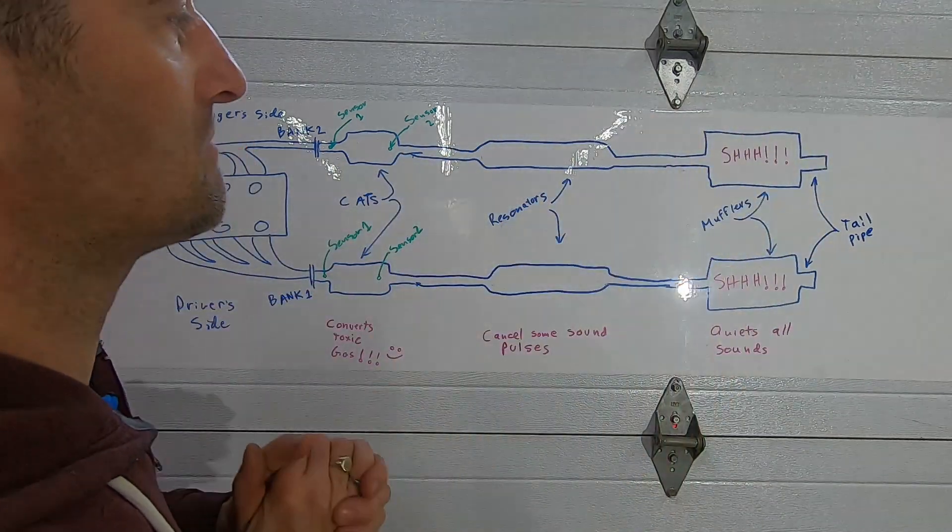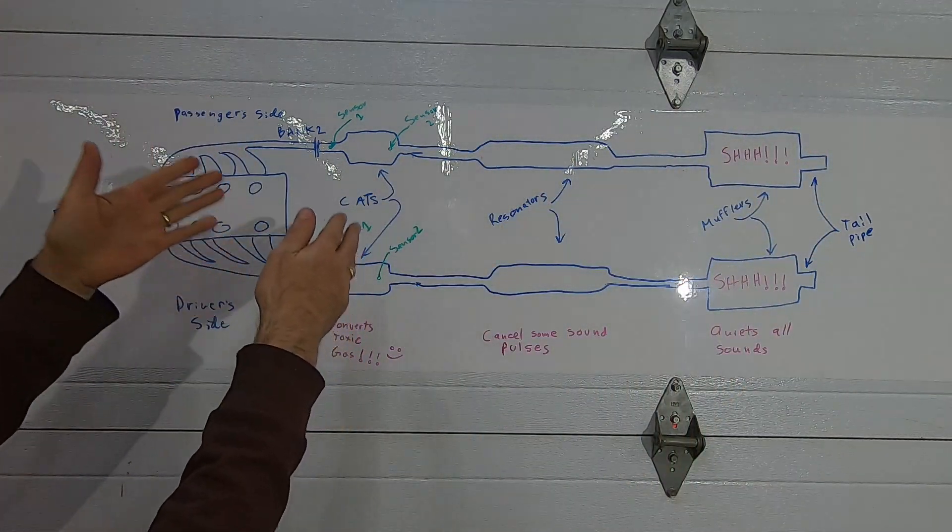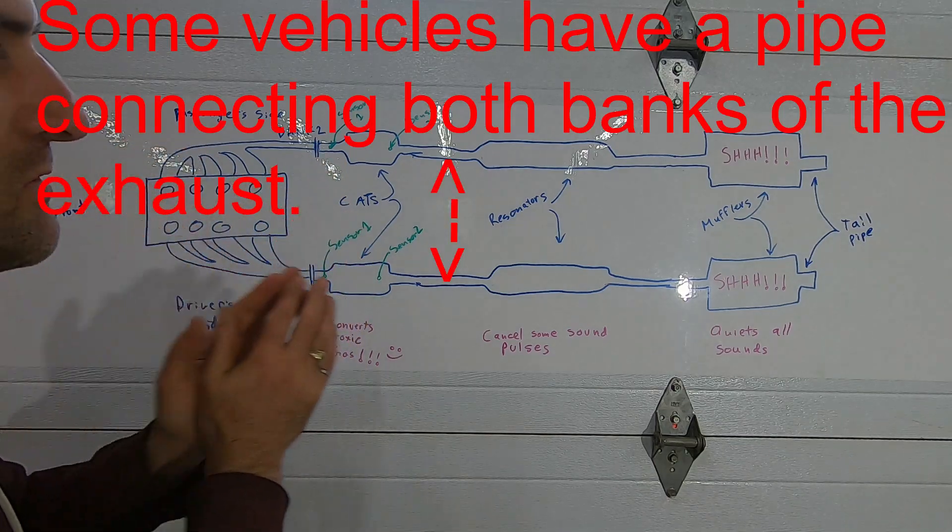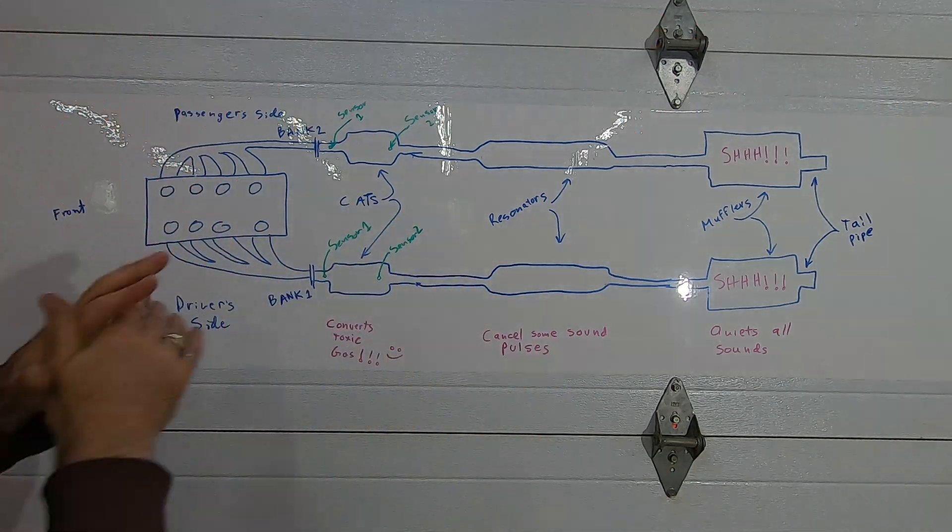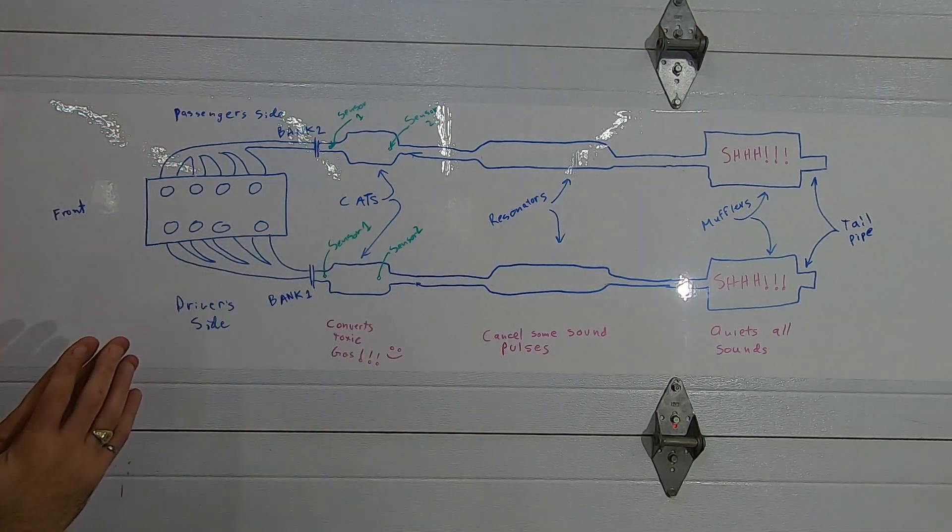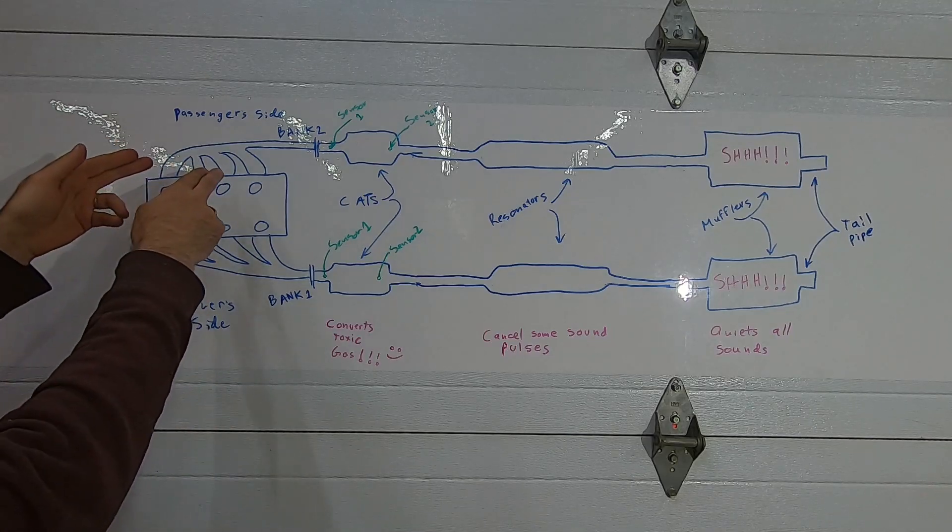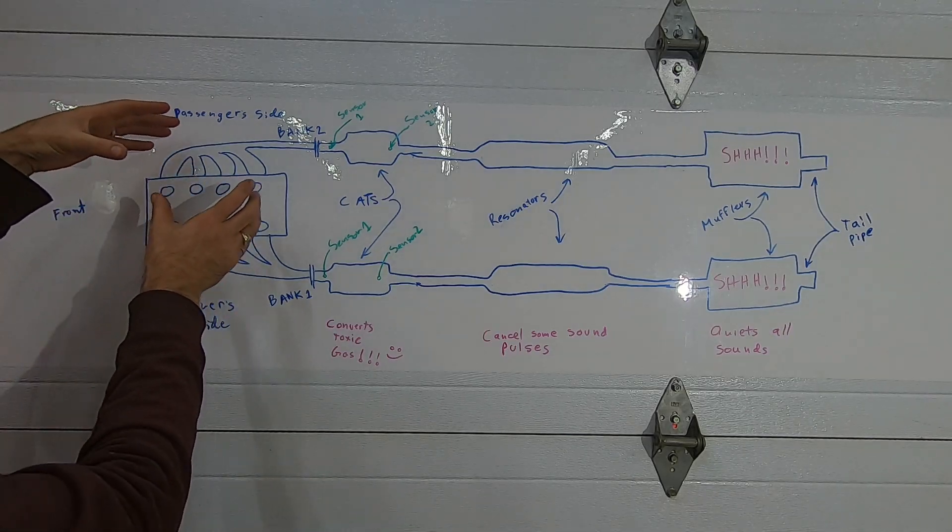Some vehicles have the resonator and muffler in reverse position. Some vehicles have more catalytic converters than what I've shown here - I think you can even have four per vehicle if it's a really fancy vehicle. There are different configurations but these are the main pieces.